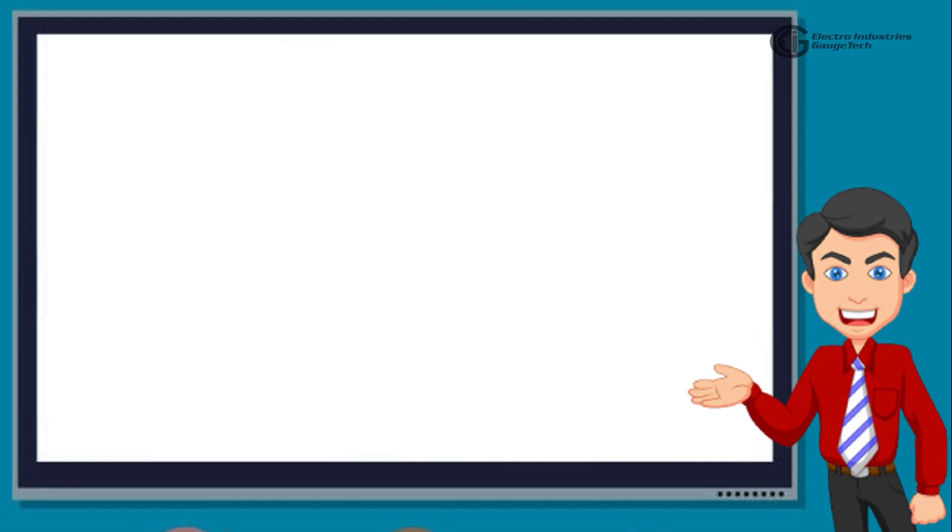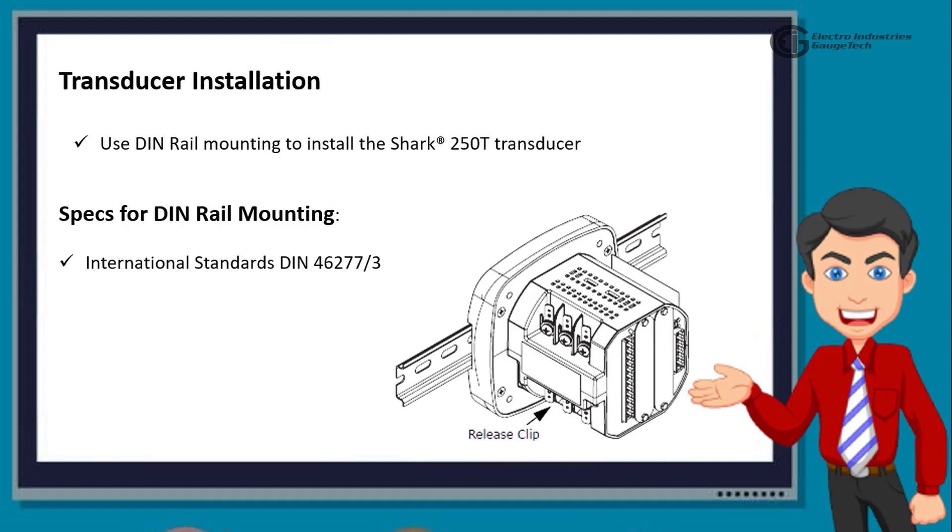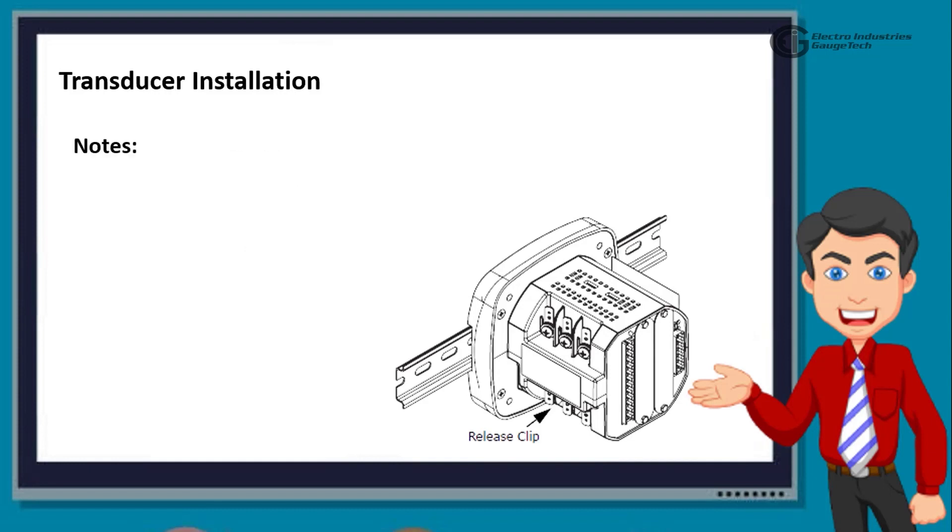Moving on to the next one, we have the transducer installation. Here, use the DIN rail mounting to install the Shark 250T transducer. The specifications for the DIN rail mounting are international standards DN46277-3. The DIN rail slotted dimensions are 0.297244 inches by 1.377953 inches by 3 inches or 0.755 centimeters by 3.5 centimeters by 7.62 centimeters. Now, slide top groove of meter onto the DIN rail. Then, press gently until the meter clicks into place. Please note that, to remove the meter from the DIN rail, pull down on the release clip to detach the unit from the rail as shown in the diagram here.